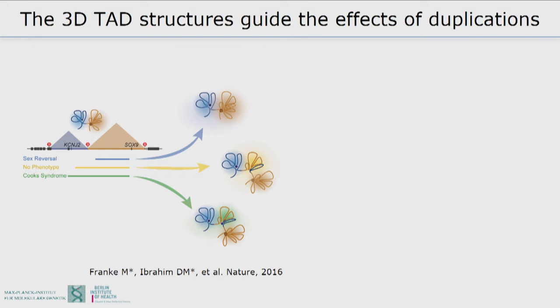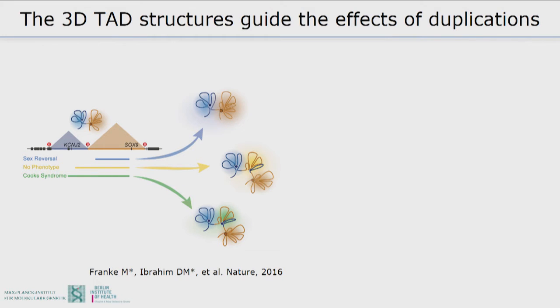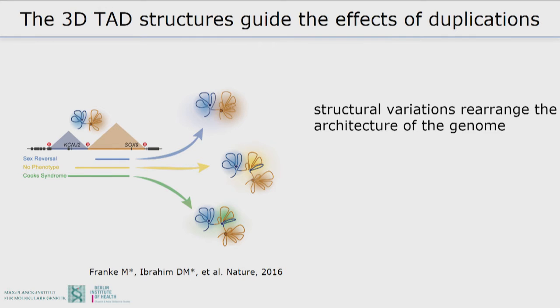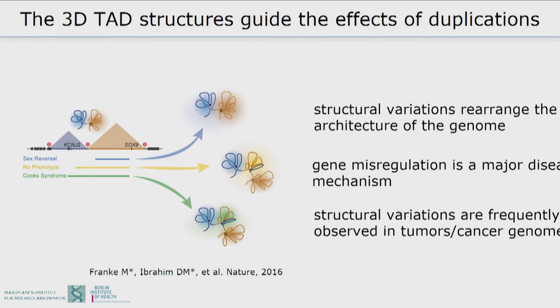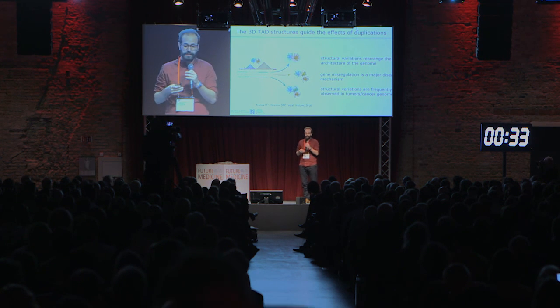So altogether, what we see by looking at structural variations — and we have heard this from Tumor before — is that by rearranging large parts of the genome, you rearrange the 3D structure of the genome and can create or combine new compartments. Structural variations rearrange the 3D architecture of the genome, and gene mis-regulation is in fact a major mechanism causing disease, and not the gene mutated itself. For personalized genomics in rare disease patients and in tumors, we think this is important. Thank you.